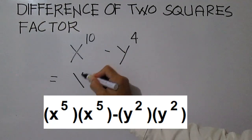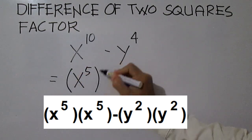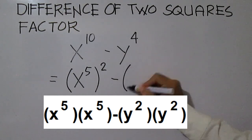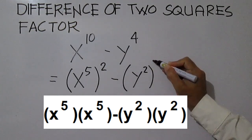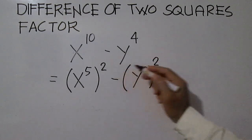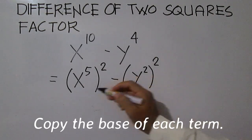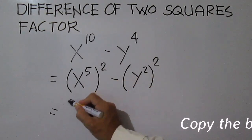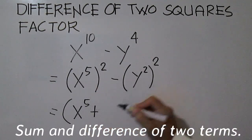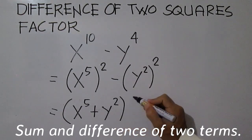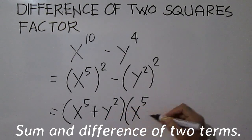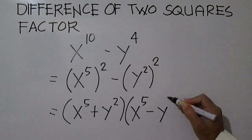x to the power of 10 can be written as x to the power of 5, quantity squared. And y to the power of 4 can be written as y squared, quantity squared. Now, the factors are simply copy the base and write in the form sum and difference of two terms: x to the power of 5 plus y squared, times x to the power of 5 minus y squared.